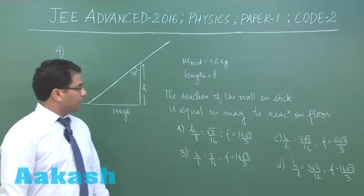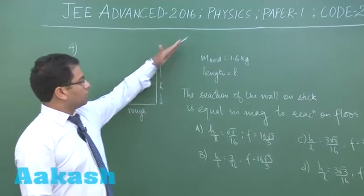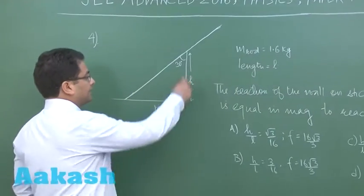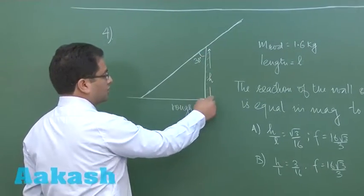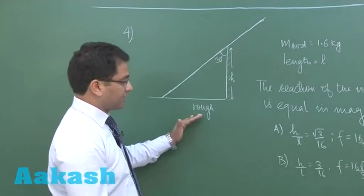Okay, question number four is another good question from mechanics. There is a rod of mass 1.6 kg, length L, and here is a wall of height h. The rod is inclined to the wall at an angle 30 degrees. This is rough.